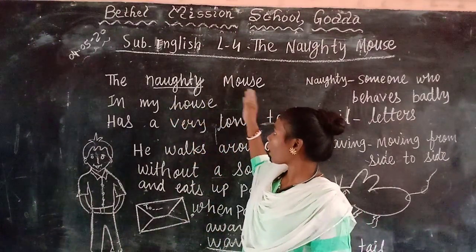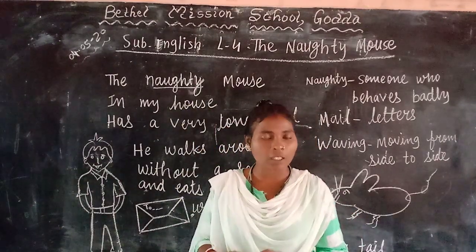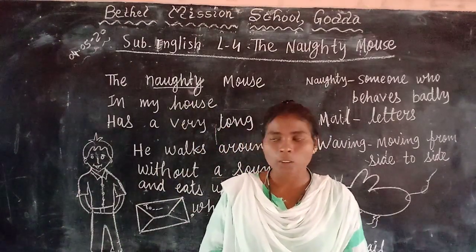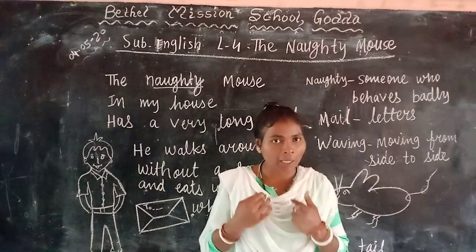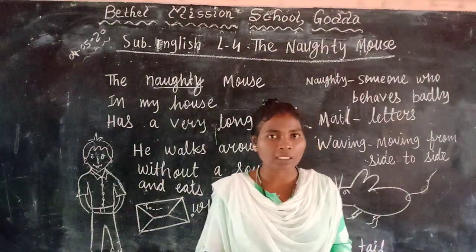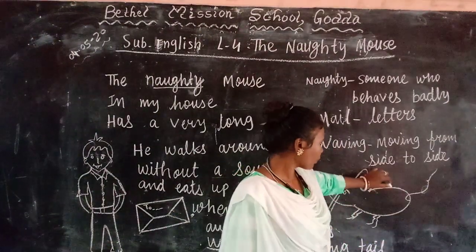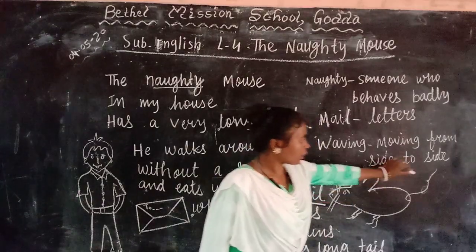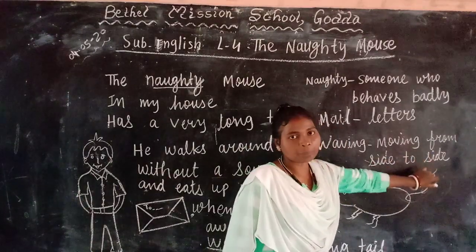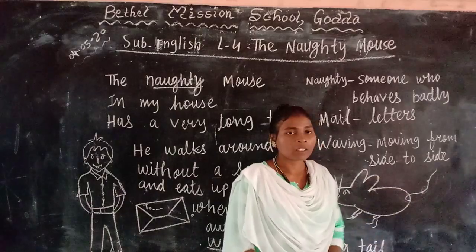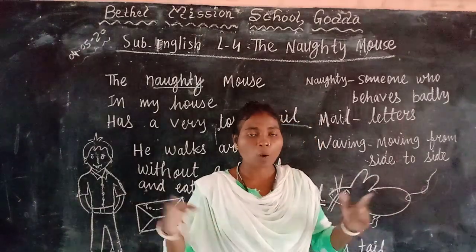The naughty mouse in my house has a very long tail. This boy is telling: the naughty mouse in my house has a very long tail. Can you see this mouse? This is his tail — it has a long tail.